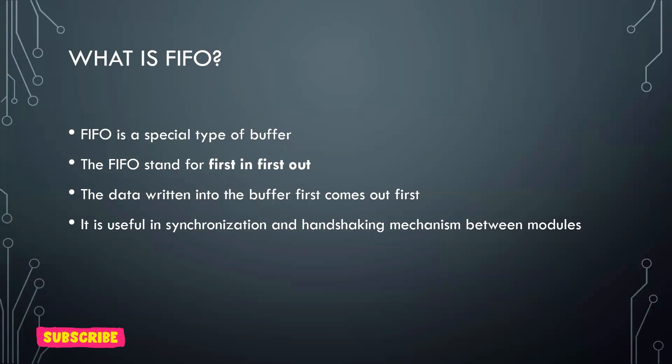FIFO is also similar to RAM. But the difference between FIFO and RAM is in RAM, you can randomly write data to any location and read data from any location. Whereas in a FIFO, you have to follow a sequence. The data which is entering into the FIFO will be read first.